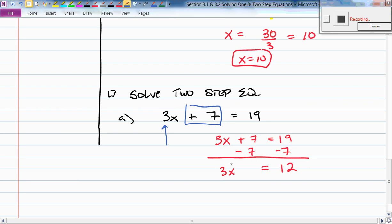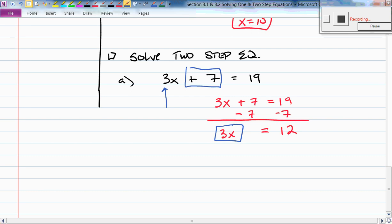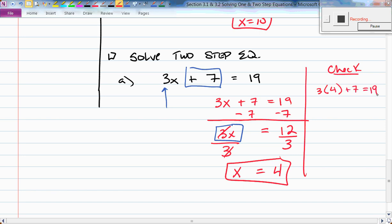Now, what's the second step of my process here? Divide by 3, because I am multiplying by 3. So I'm going to divide by 3. Therefore, x is going to be 4. And let's check our work. Is 3 times 4 plus 7 equal to 19? 3 times 4 is 12 plus 7. That equals 19. So I must have done it right.